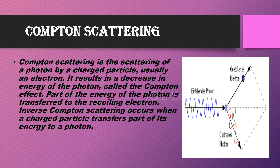Compton Scattering is the scattering of a photon by a charged particle, usually an electron. It results in a decrease in energy of the photon, called the Compton effect. Part of the energy of the photon is transferred to the recoiling electron. Inverse Compton Scattering occurs when a charged particle transfers part of its energy to a photon.